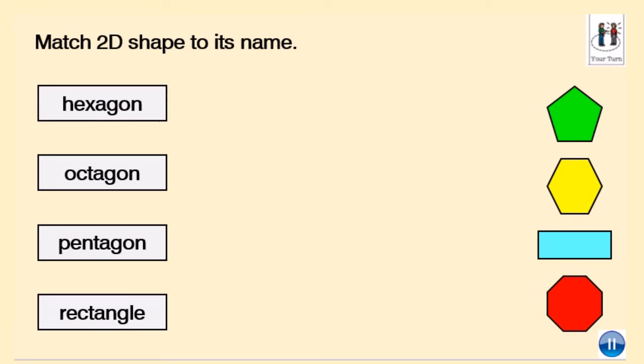Same again, we're going to match the 2D shape to its name. I look at a hexagon, and I know that a hexagon has got six sides, so if I'm not sure, I'm going to count. One, two, three, four, five, so that's not a hexagon. One, two, three, four, five, six. I know that a six-sided shape is called a hexagon. Pause the video, remember to use what was on the previous part of the video to help you if you don't know how many sides an octagon, pentagon, or rectangle have.